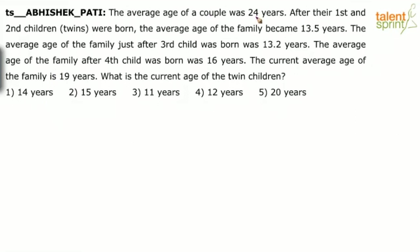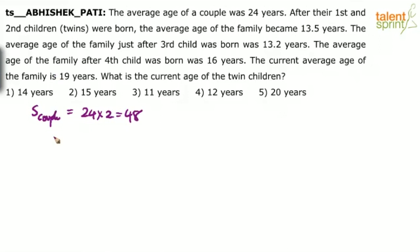The average age of a couple was 24 years. This is about a past time, because the current average age of the family is 19 years. The sum of the ages of the couple will be 24 into 2, which is equal to 48 years. Then after their first and second children were born, the average age of the family becomes 13.5 years. That means the sum of the couple plus the twins is 13.5 multiplied by 4 — because there are 4 members in the family — which is 54.